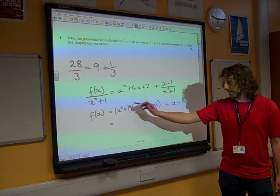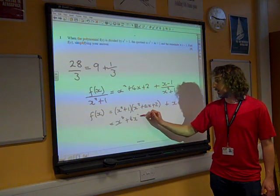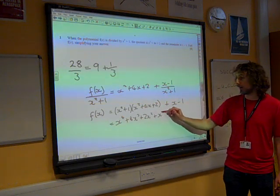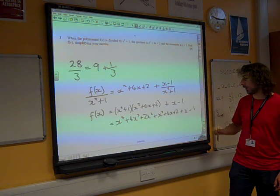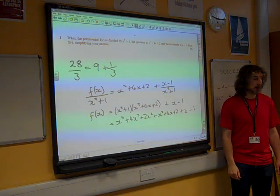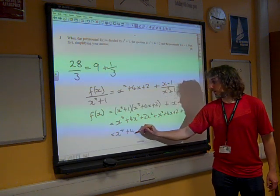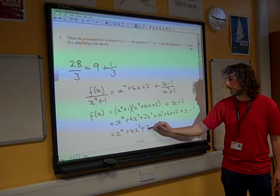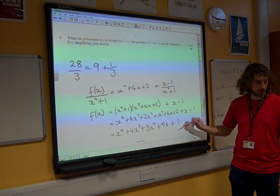We should be able to do this. This is x² times everything in the bracket, plus 1 times everything in that bracket. And we also had an x - 1 at the end. If we collect together like terms, we've got x⁴, 4x³, 2 plus another 1 is 3x², 5x, and plus 1.